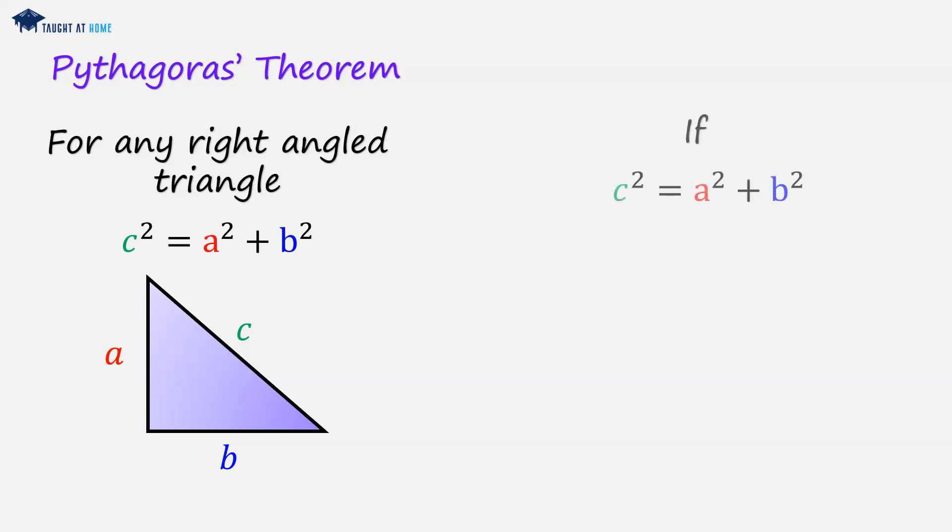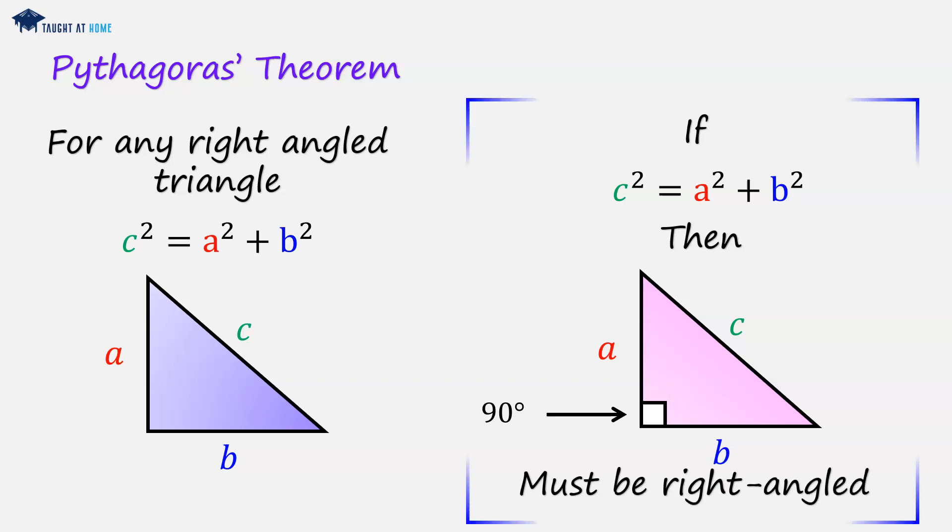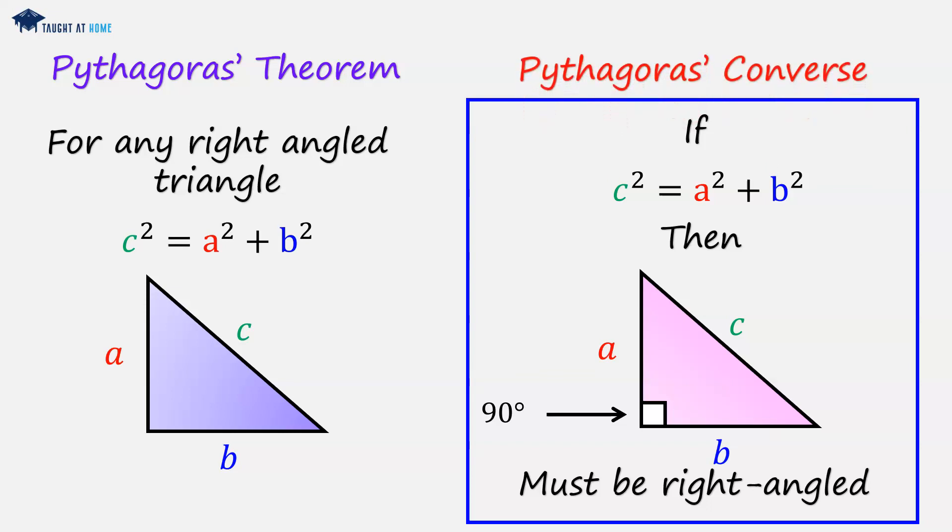We could also say that if c squared does equal a squared plus b squared, then the triangle must be right angled. This here is what is known as Pythagoras' Converse.